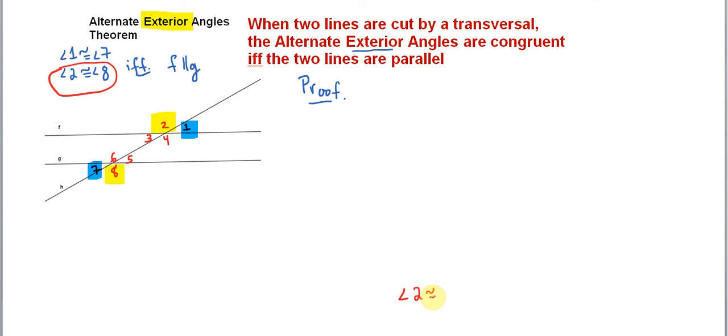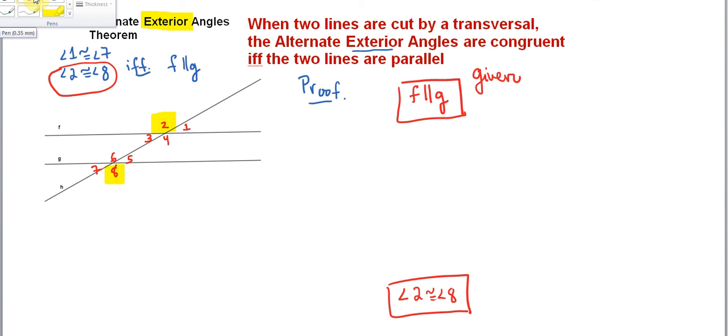I know that angle 2 being congruent to angle 8 will be the final step of the proof. The starting point is that lines F and G are parallel to each other—that's the given. I'm going to follow a similar strategy to the last example. We'll start looking at this picture and listing out things we know to be true. I'm going to delete these highlights so they don't distract you. We're focusing on angles 2 and 8.